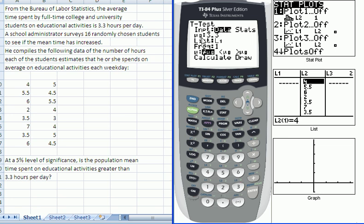Next is the list that contains your sample data, and on my calculator I put that into list L2, so I'm going to choose L2 here. Frequency you want to leave as 1, and then this last line is where you're going to give it the alternative hypothesis.